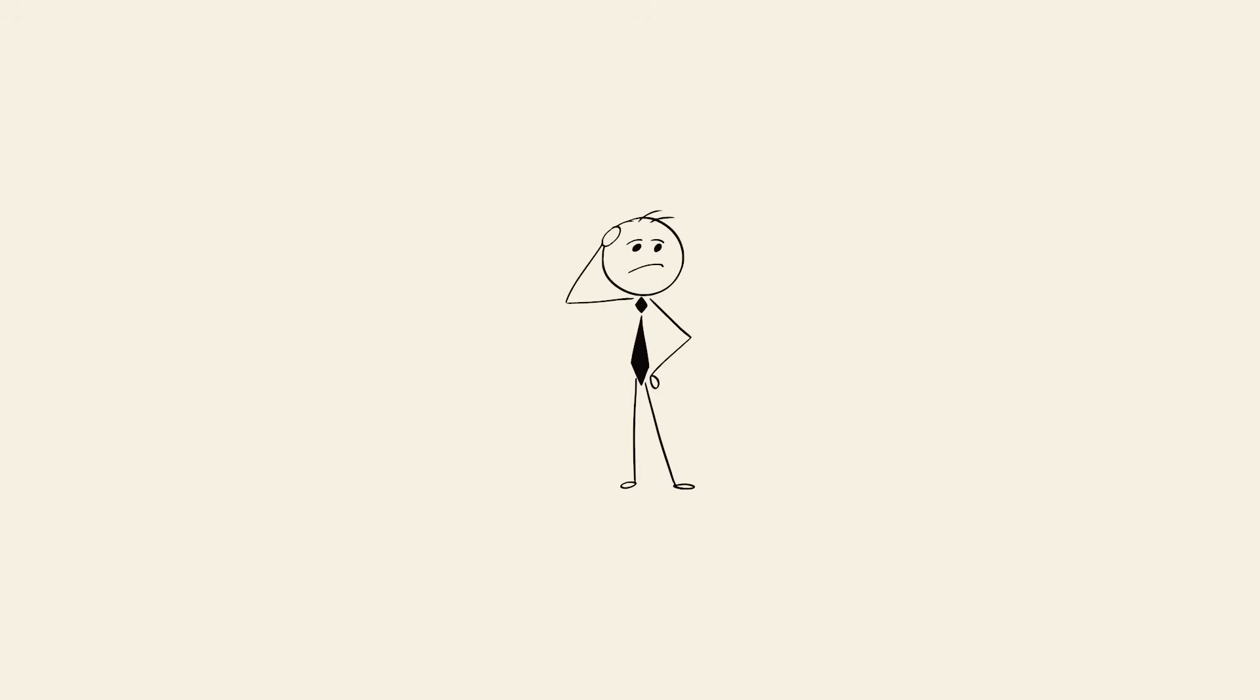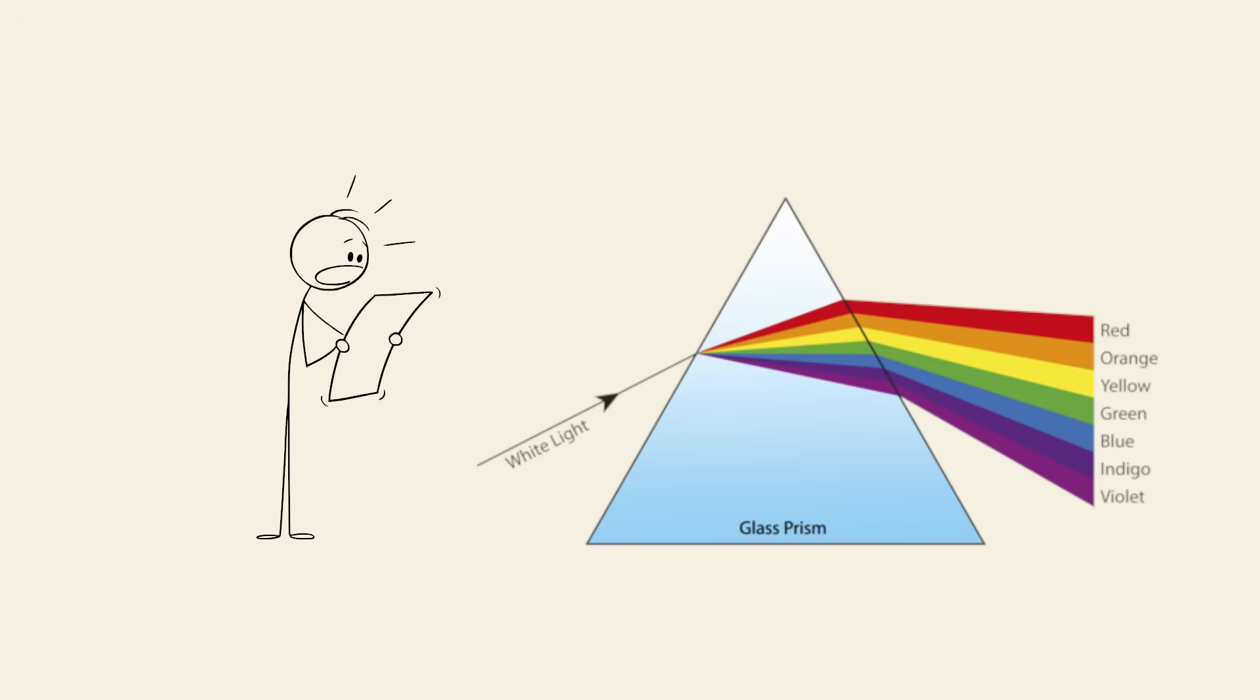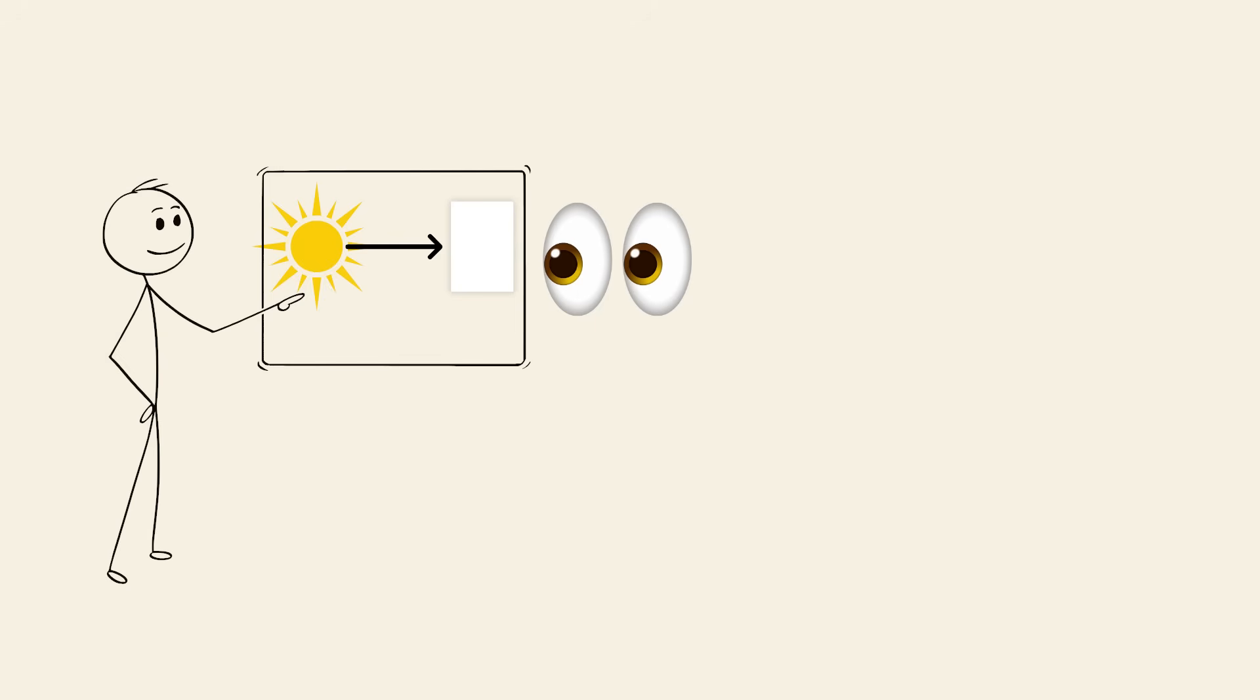Why is the sky blue? It's one of the first science questions we ask as kids, and surprisingly, it's all about how light behaves. Sunlight looks white to our eyes, but it's actually made up of all the colors in the rainbow.